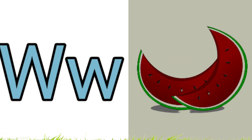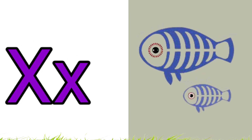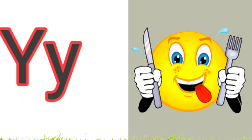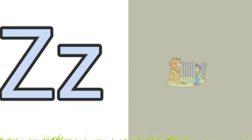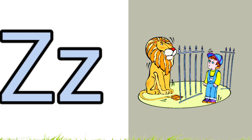W is for Watermelon, X is for Extra Fish, Y is for Yummy, Z is for Zoo.